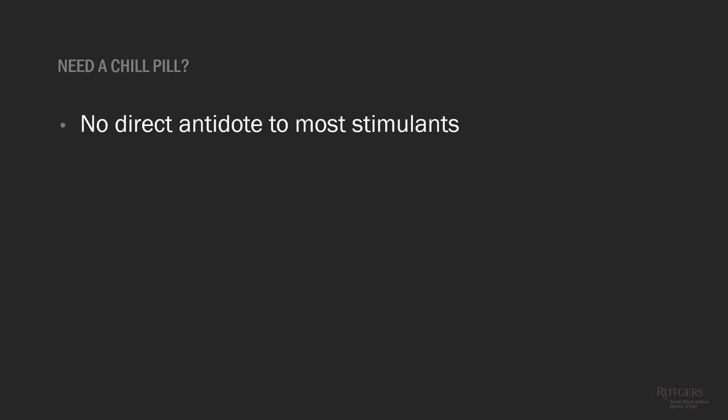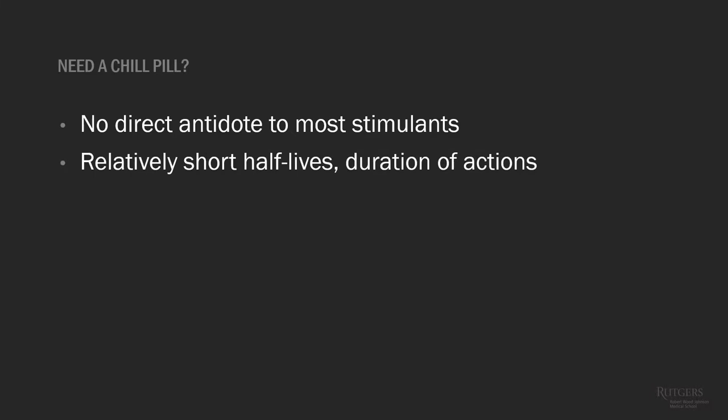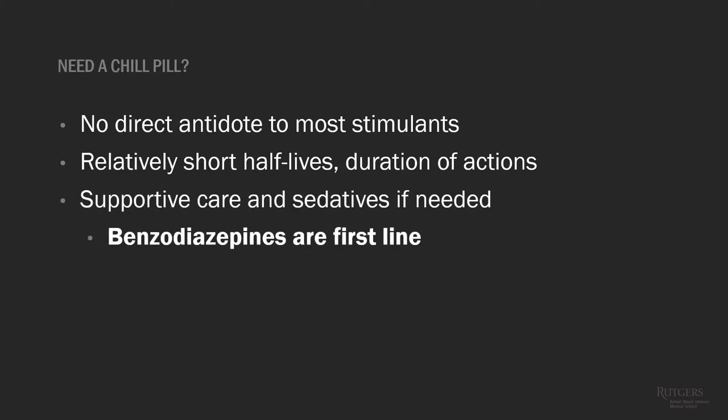When treating patients presenting with a sympathetic toxidrome, there is no real direct antidote. The half-lives are relatively short, so a lot of times you're just providing supportive care. If you need to give medication, benzodiazepines are generally first line — they help calm agitation, help with hypertension and tachycardia, basically helping the patient relax and decrease the effect of the catecholamines. You'll usually admit these patients for further observation.